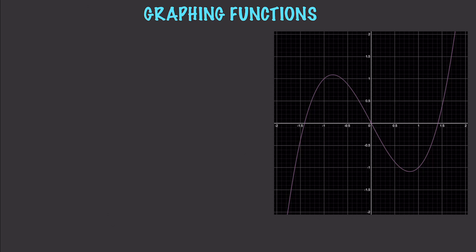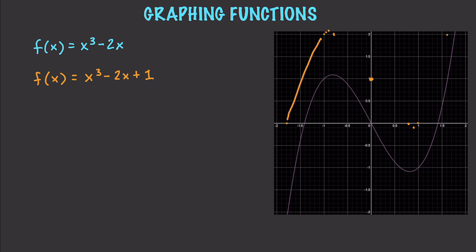We're going to be doing a lot of graphing of functions. On screen is the graph of x cubed minus 2x. If you add a constant to this function, it's going to shift the graph up or down. For example, if we take our original function and add one to it, the graph will be exactly one point above where it was — it's basically just going to be one value above where it was.